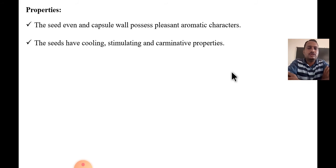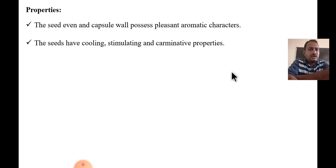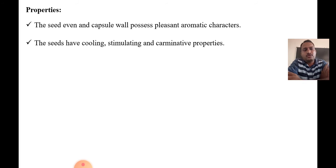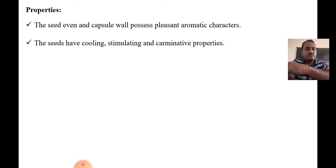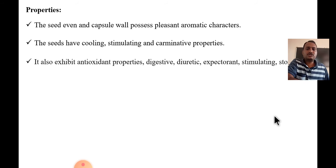Seeds have a cooling property — they help cool the body and reduce heat. Cardamom is also a stimulating agent — it stimulates the brain. Its chemical constituents stimulate the brain and body. It also has carminative properties and helps to decrease blood pressure.